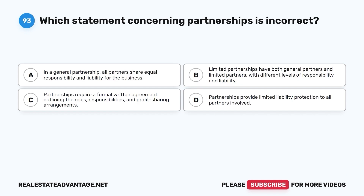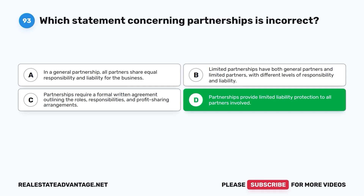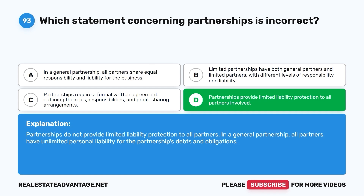Question 93. Which statement concerning partnerships is incorrect? A. In a general partnership, all partners share equal responsibility and liability for the business. B. Limited partnerships have both general partners and limited partners with different levels of responsibility and liability. C. Partnerships require a formal written agreement outlining the roles, responsibilities, and profit-sharing arrangements. D. Partnerships provide limited liability protection to all partners involved. The correct answer is D. Partnerships do not provide limited liability protection to all partners. In a general partnership, all partners have unlimited personal liability for the partnership's debts and obligations.